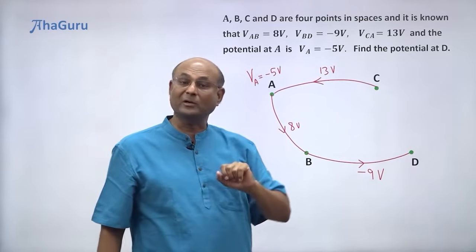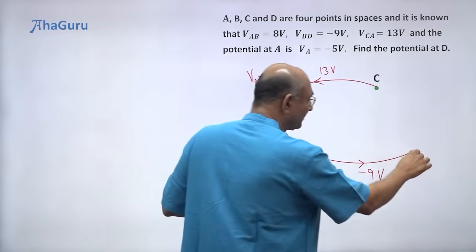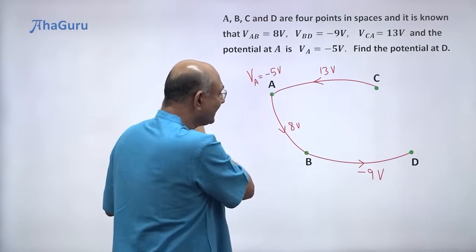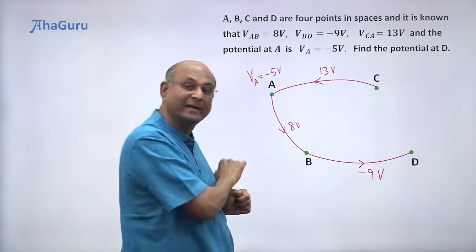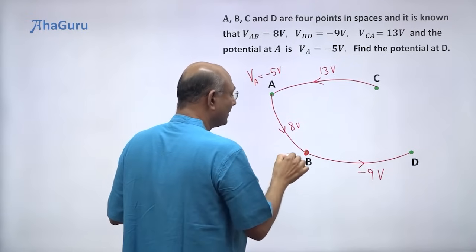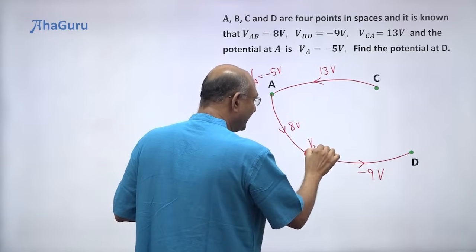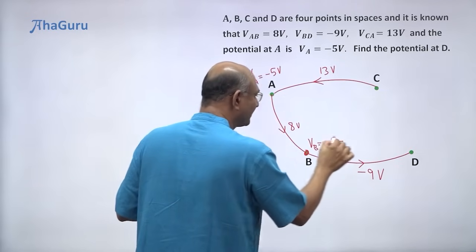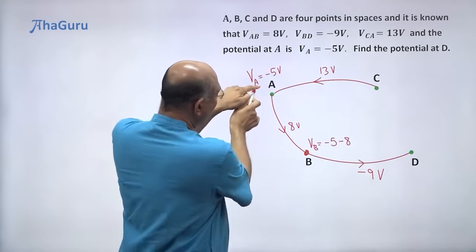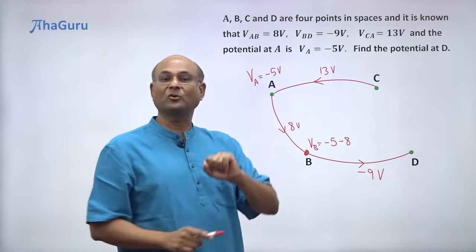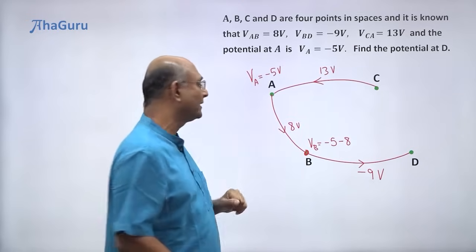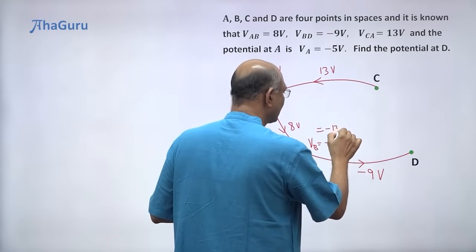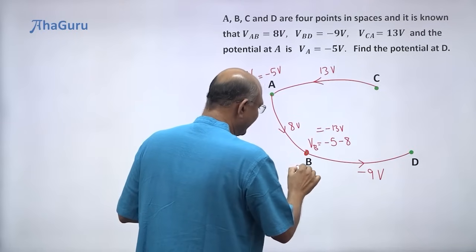What is the question? Find the potential at D. So I want to know what is the potential here. Well, this point's potential is minus 5. What will be the potential here? Well, potential at B, how much is this? V_B is potential at A minus the drop. Potential at A minus the drop. So minus 5 minus 8. So potential at B is minus 13 volts. So this is minus 13 volts.